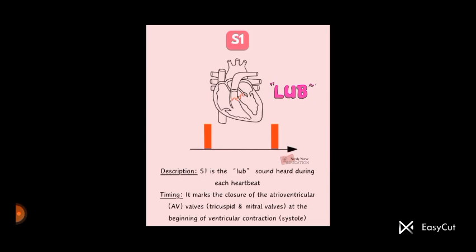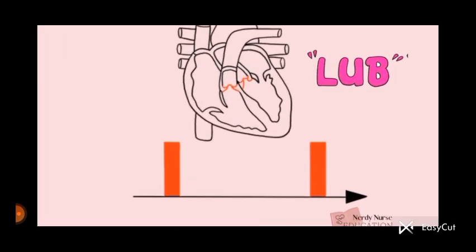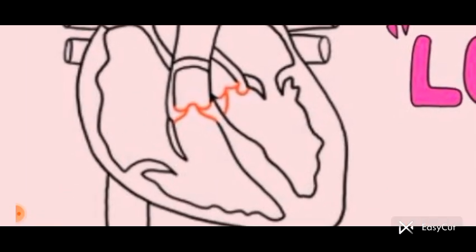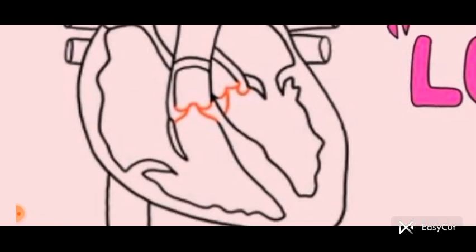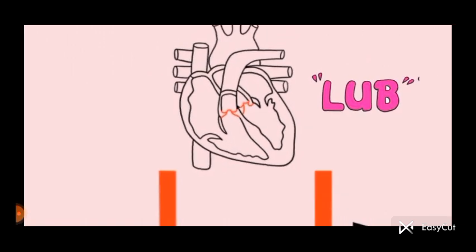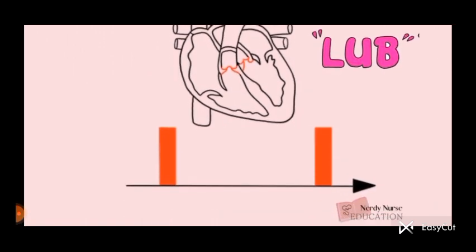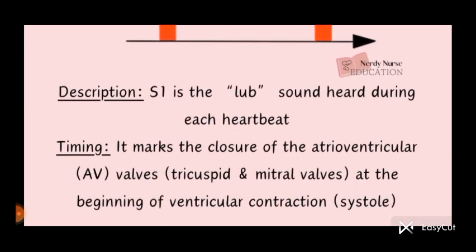It occurs at the start of ventricular systole. So it occurs at the starting of the ventricular system which is caused by the closure of the mitral and tricuspid valves. So when these mitral and tricuspid valves are closed, then the S1 sound is produced.